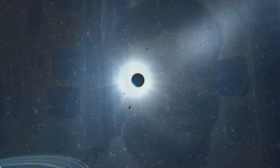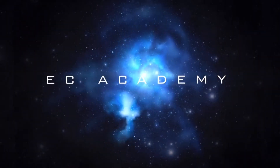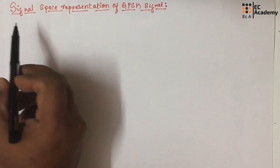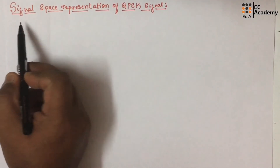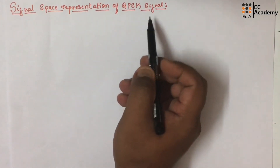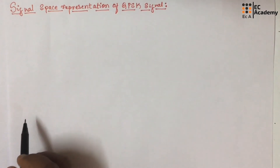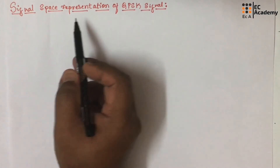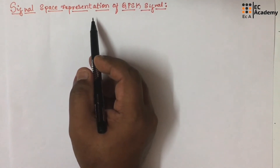Hello friends, welcome to EC Academy. In this lecture, let us understand signal space representation of QPSK signal. Signal space representation is a very effective and useful way to analyze the digitally modulated signal.